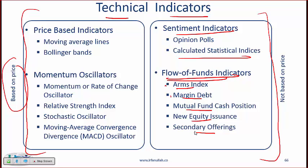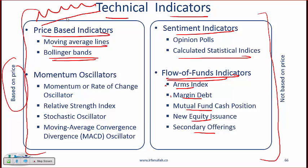On the price-based side, you have moving average lines, which take the average of the last 20 or 30 days to smooth out price movement and give a better sense of the trend. Bollinger Bands, created by someone named Bollinger, use the concept of moving averages to form bands around the stock movement, allowing you to determine where to buy and where to sell. Momentum indicators, also called momentum oscillators, are also price-based — learn at least a line or two about each type.